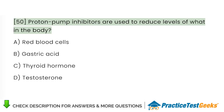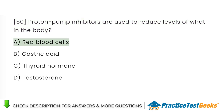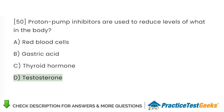Proton pump inhibitors are used to reduce levels of what in the body? A. Red blood cells. B. Gastric acid. C. Thyroid hormone. D. Testosterone.